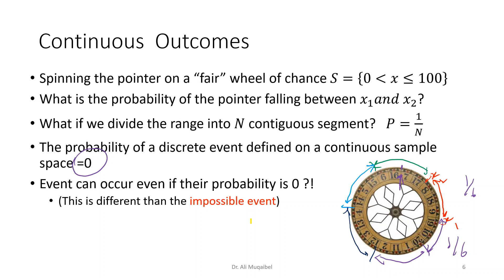Now, an event can occur even if their probability is equal to zero. How is this possible? Because if you rotate the wheel, it might stop at this exact point. So if you consider that case, then although the probability equals zero, it occurred. So this is different than the impossible events, because impossible events has probability equal to zero but it cannot happen, and continuous outcomes, although the probability equals zero, things could happen.